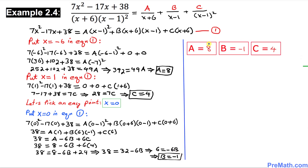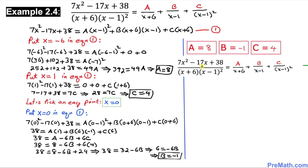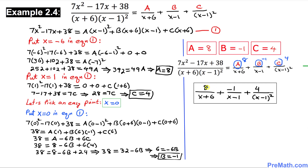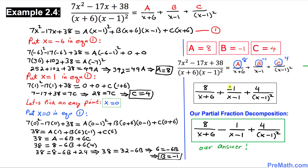So we have found A equals 8, B equals negative 1, and C equals 4. In our partial fraction decomposition we replace A with 8, B with negative 1, and C with 4. The negative sign is brought into the middle, and that is our final answer. Thanks for watching — please don't forget to subscribe to my channel for more exciting videos.